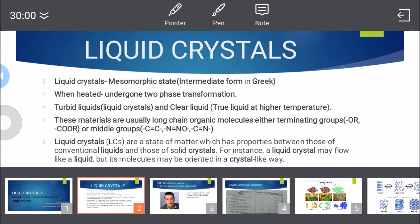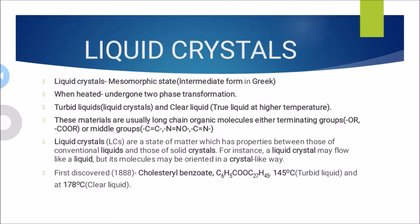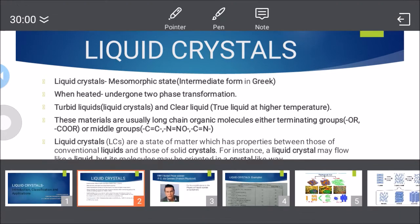In the Liquid Crystals topic, why does it get this name? We may know that there are three states of matter: solid, liquid, and gaseous state. Now, liquid crystals are termed in some places as the fourth state of matter. It gets its name because of the mesomorphic state, which means intermediate form in the language of Greek.